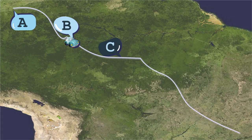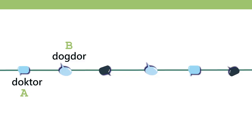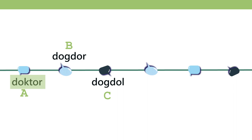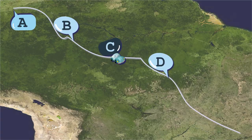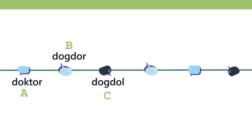Keep going south to dialect C and they say 'dogdol' — the 'th' changes to 'l.' If you know dialect B, you immediately understand dialect C because it's just one change. But going from dialect A to dialect C involves two or three changes, making it more challenging. A speaker of dialect B would immediately understand dialect C, while a speaker of dialect A may struggle. Moving further south to dialect D, the 'l' changes to 'w' — 'dogtho' — easy for dialect C speakers but harder for dialect B speakers, and very hard for dialect A speakers.